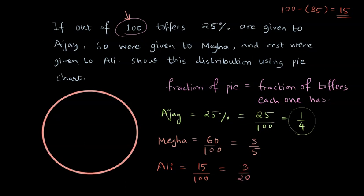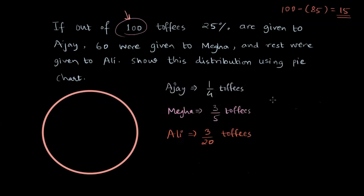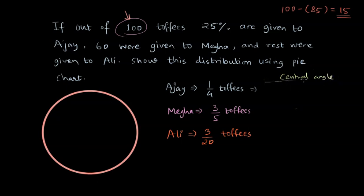Now let's write this information concisely — we have the fraction of toffees each person received. Before showing that on the pie chart, we need to find the central angle for each sector. We will show Ajay's sector in blue, Megha's in pink, and Ali's in orange. The central angle for each sector is the fraction times 360 degrees, because the whole circle corresponds to 360 degrees. For Ajay, that is 1/4 of the whole circle.